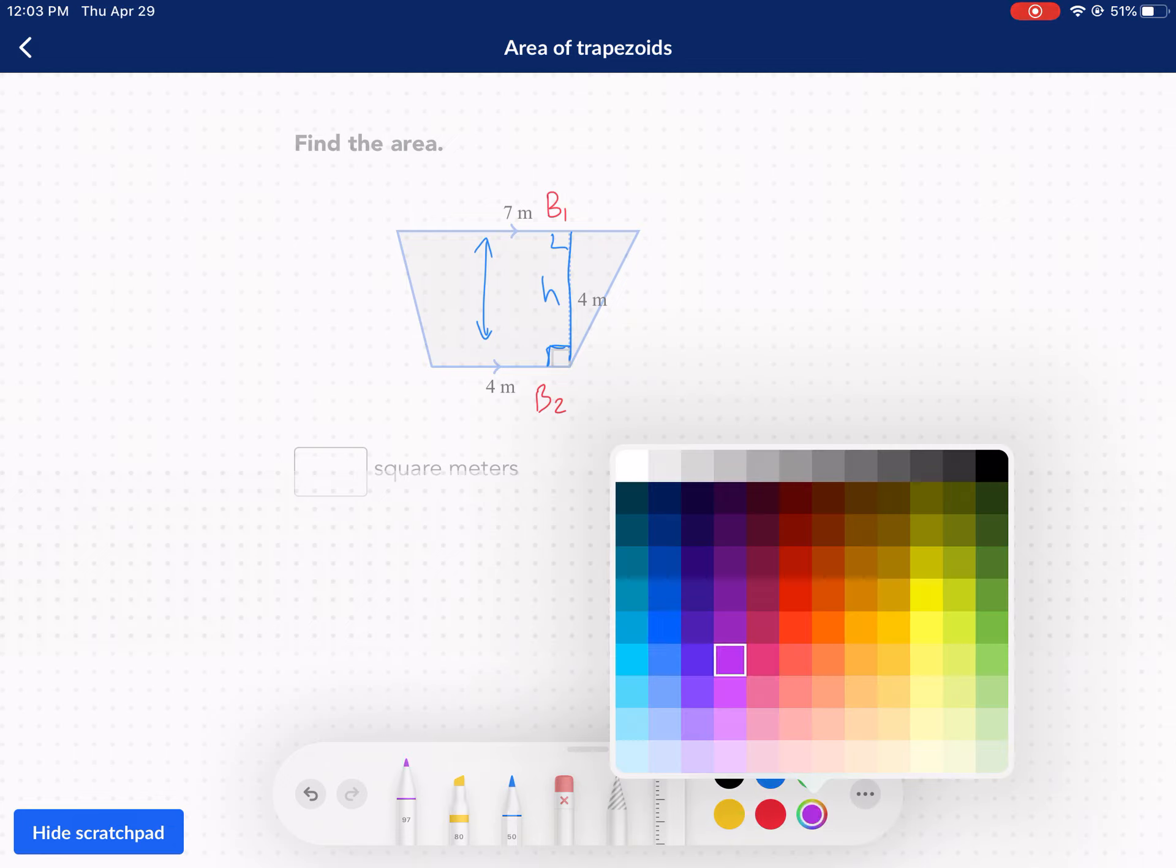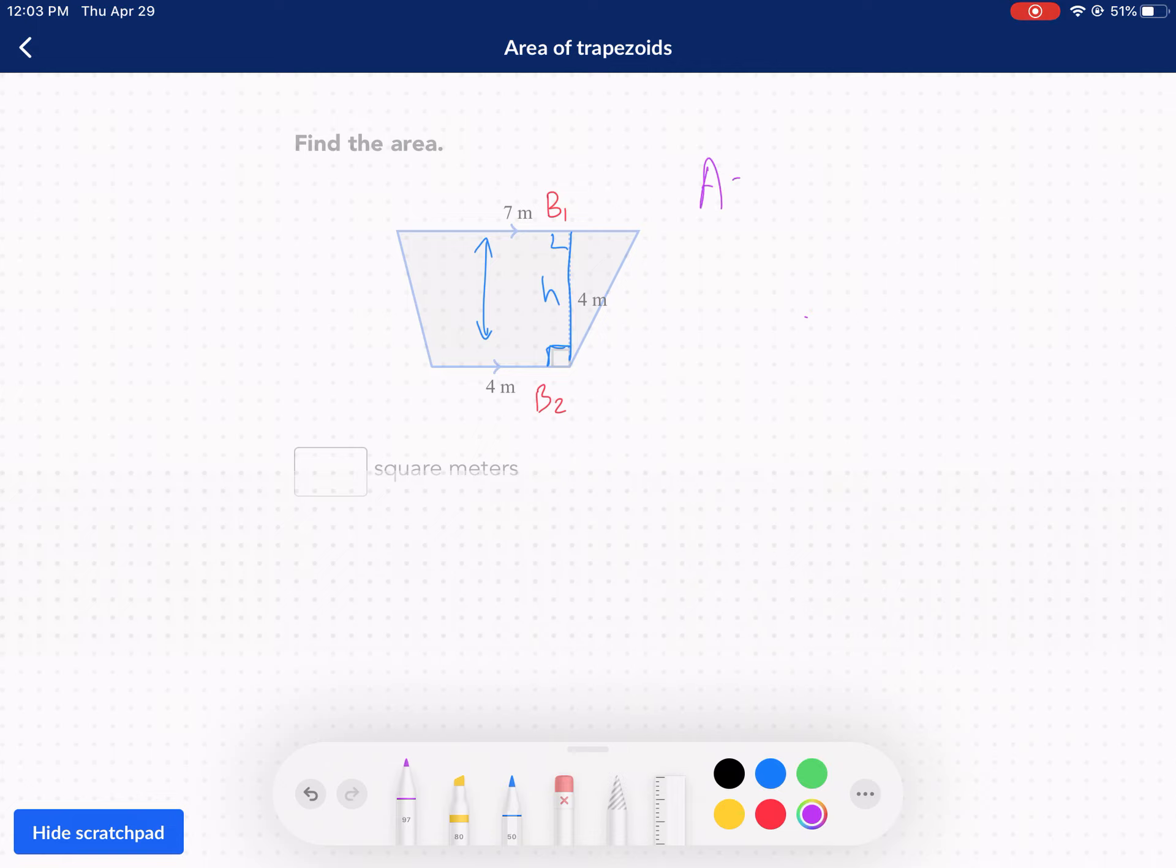Now with all of this we can easily write down the area of a trapezoid, and that's one half times the sum of the bases times the height. Now what does this mean? This part, one half times the sum of the bases, is essentially finding the average of the bases.